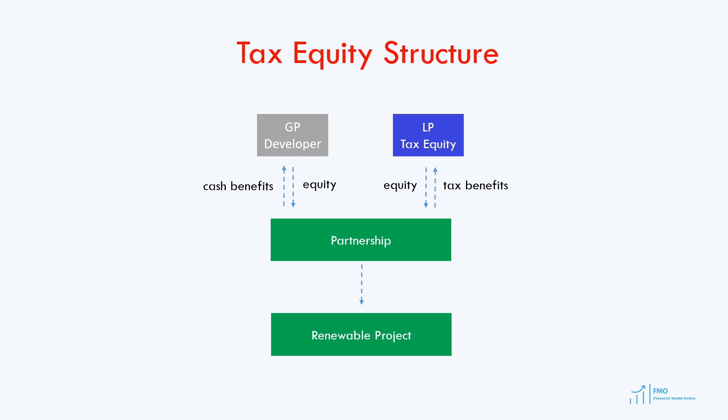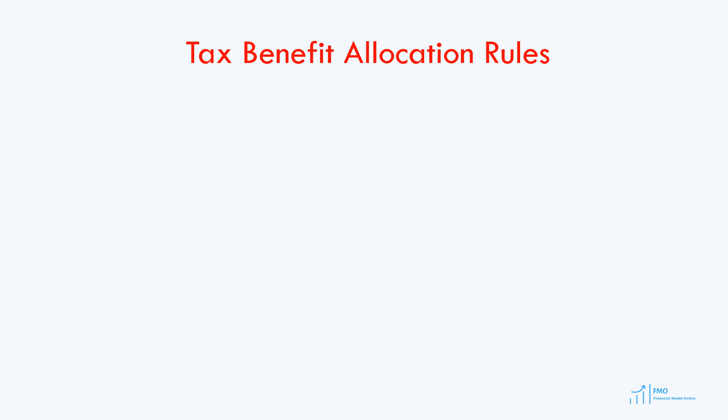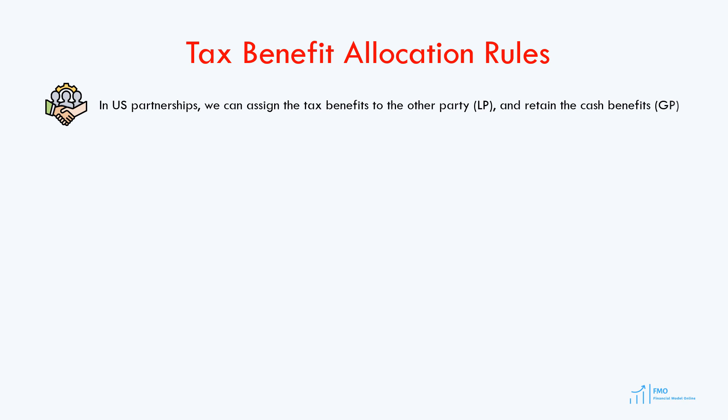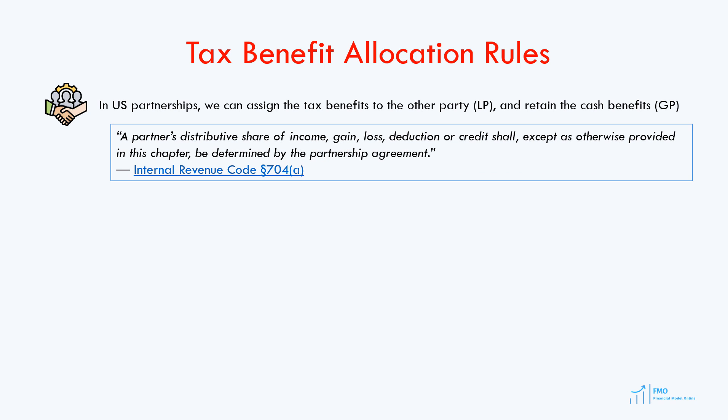Most renewable transactions are structured as partnerships; however, you can also structure them as limited liability companies, which will result in similar tax benefit allocations. In a U.S. partnership, we can assign the tax benefits to one partner and retain cash benefits for the other. This allocation is governed by the partnership agreement between the partners — in other words, it is determined by the parties themselves.